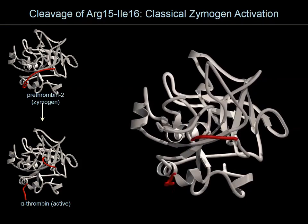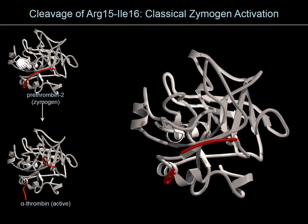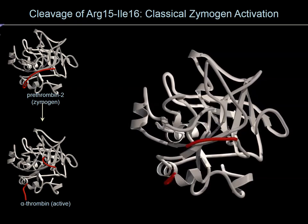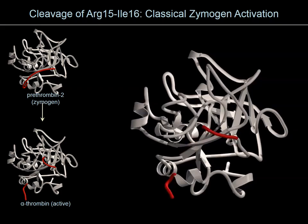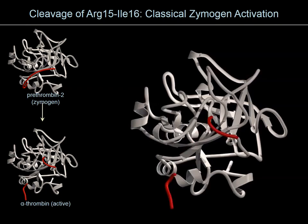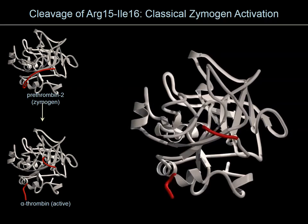Most hemostatic proteases belong to the chymotrypsinogen family and are activated by a single peptide bond cleavage. The mechanism of zymogen activation is shown here for pre-thrombin 2, which is an inexplicable name for the catalytic domain of prothrombin. Cleavage of the Arg15–Ile16 peptide bond generates a new aminoterminus — isoleucine-16 — which inserts into the aminoterminal binding cleft in the catalytic domain, forming a salt bridge with ASP-194.